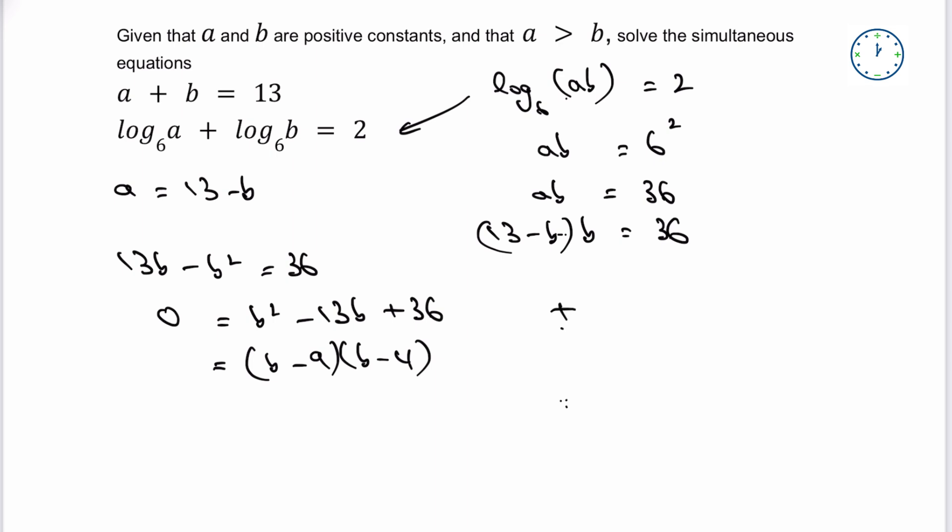Now, if a is greater than b which it says so in the original question then I can write that then a must equal 9 and b must equal 4 and that would be the end of this particular question.